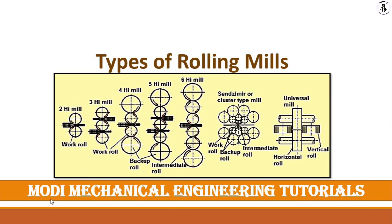Welcome to my YouTube channel Modi Mechanical Engineering Tutorials. In this video I would like to explain in detail about different types of rolling mills. The rolling process is used to convert raw material into a desired shape and size, and according to the requirement of that shape and size, different kinds of rolling mills are used.